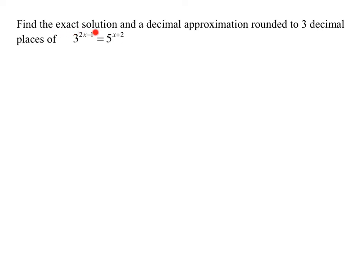In this problem, I need to find the exact solution and a decimal approximation rounded to three decimal places for this equation. It's an exponential equation since the variables are up in the exponents. If I can make the bases the same, it will be easy to solve. But on the left I have base three, and on the right I have base five, so there's no way to make the bases the same.